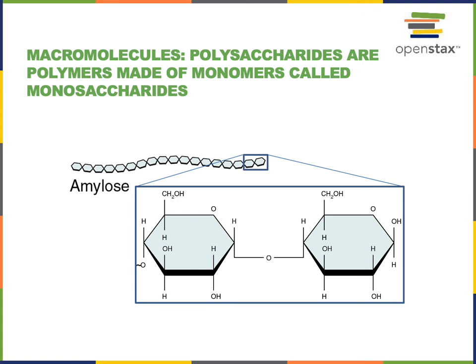Amylose has a repeating unit — the monomer glucose. Multiple glucose monomers were linked together by dehydration synthesis in order to form amylose. And when we digest starches like amylose, we perform hydrolysis reactions to break down amylose, releasing smaller carbohydrates, such as maltose and eventually glucose.